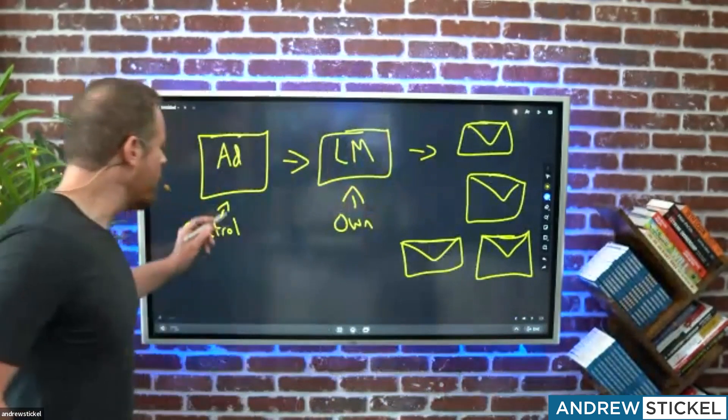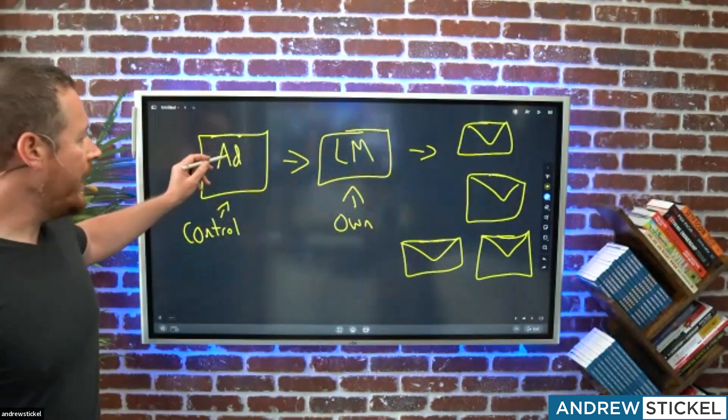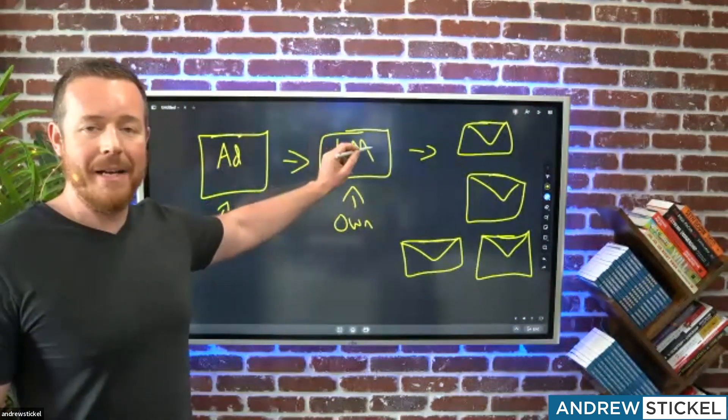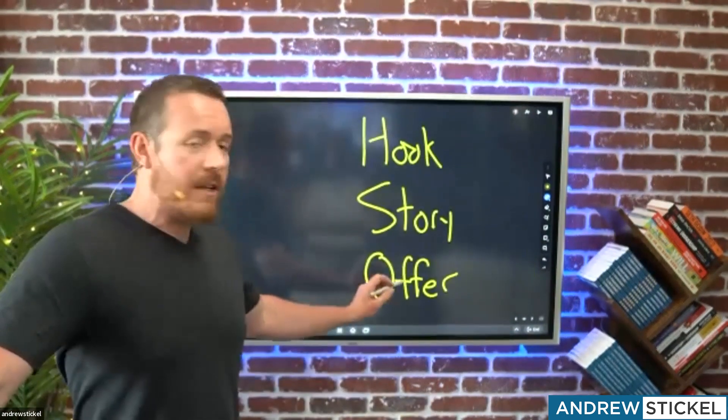Viral videos are different in that we're going with current events — basically newsjacking, piggybacking on something like the Will Smith virality to get our name out there and get viewers and subscribers. It builds your channel and gives you credibility, but it doesn't translate into a whole lot. What we're actually trying to do with ads is create ads that have a purpose: when someone sees your ad, we want them to click and download or opt in for your lead magnet.